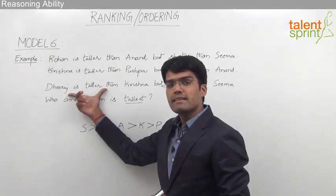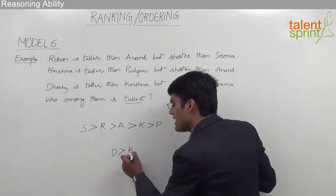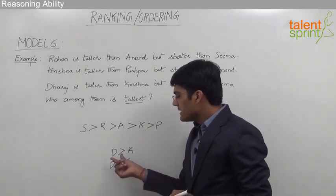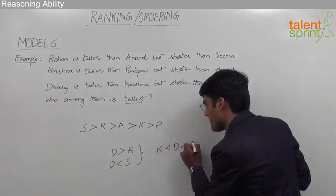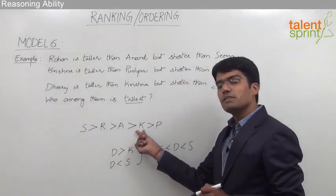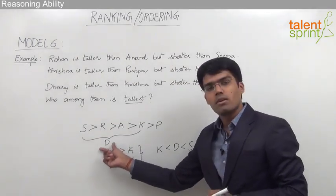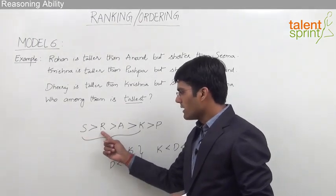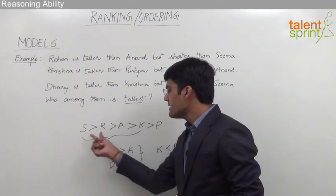The last statement says Dheeraj is taller than Krishna but shorter than Sima. So Dheeraj is taller than Krishna and shorter than Sima, meaning Dheeraj comes somewhere in between Krishna and Sima. Since Sima and Krishna are already placed, Dheeraj can come anywhere between them, and there is no way Dheeraj can be the tallest person.